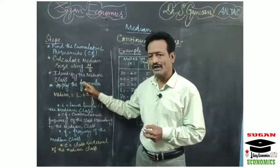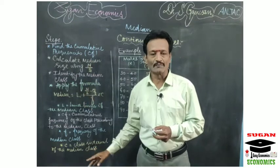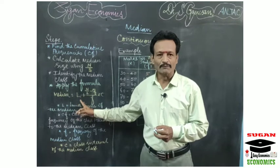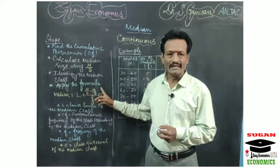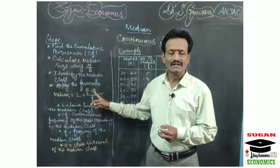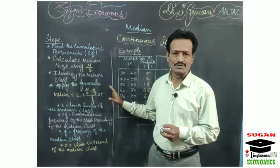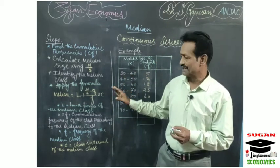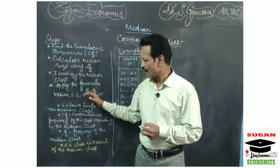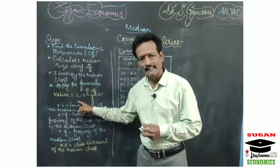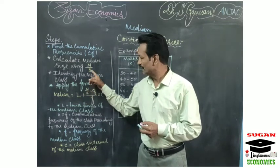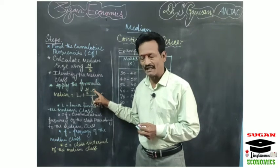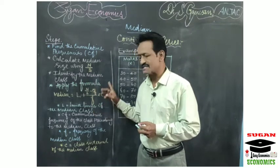Then after that, we have to apply the formula. The formula is: Median = L + [(n/2 − Cf) / f] × C. This is the formula for calculating median for continuous series. We need to understand what is L — n by 2 you already know, that is the median size — and what is Cf, f, and C.